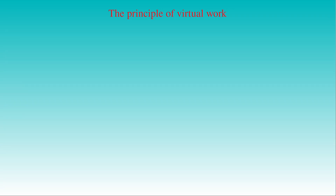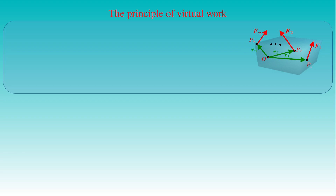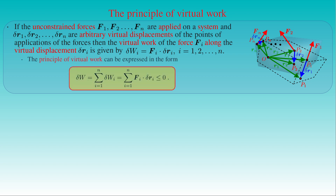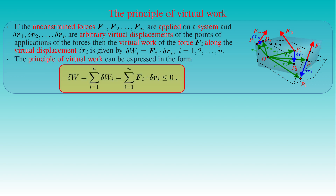The mathematical formulation of the principle of virtual work is as follows. If unconstrained forces F1, F2, ..., Fn are applied on a system at points P1, P2, ..., Pn, and ΔR1, ΔR2, ..., ΔRn are arbitrary virtual displacements of the points of application, then the virtual work ΔWi done by force Fi along virtual displacement ΔRi is given by the dot product Fi · ΔRi for i from 1 to n. Since the net virtual work ΔW is the sum of all ΔWi, the principle of virtual work is expressed as the inequality: the sum of Fi · ΔRi for i equals 1 to n is equal to or less than zero.